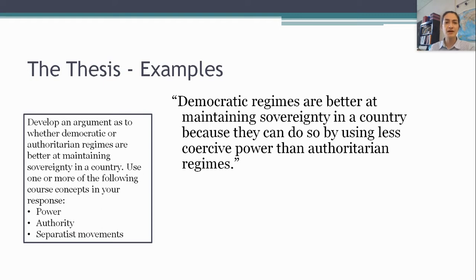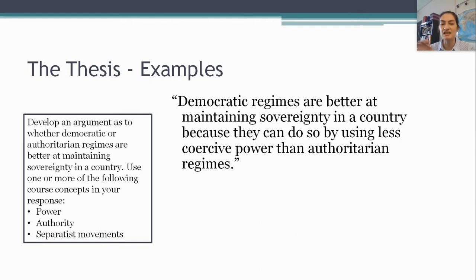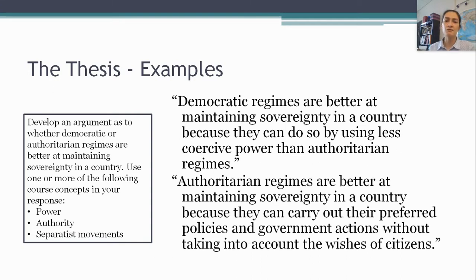So how do you do this right? Here's one option: 'Democratic regimes are better at maintaining sovereignty in a country because they can do so by using less coercive power than authoritarian regimes.' That answers the question, establishes a line of reasoning, and hints that power is going to be the concept used in this argument. Or: 'Authoritarian regimes are better at maintaining sovereignty in a country because they can carry out their preferred policies and government actions without taking into account the wishes of citizens.' This doesn't explicitly engage with any of the three listed concepts, but that's okay — you're not required to do so at the thesis stage. Either of those would earn the thesis point.